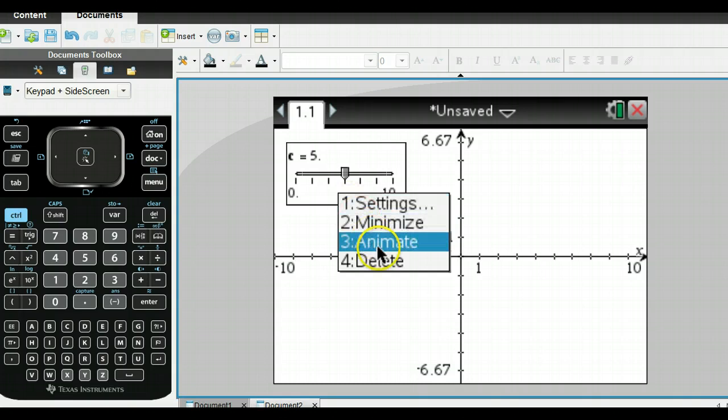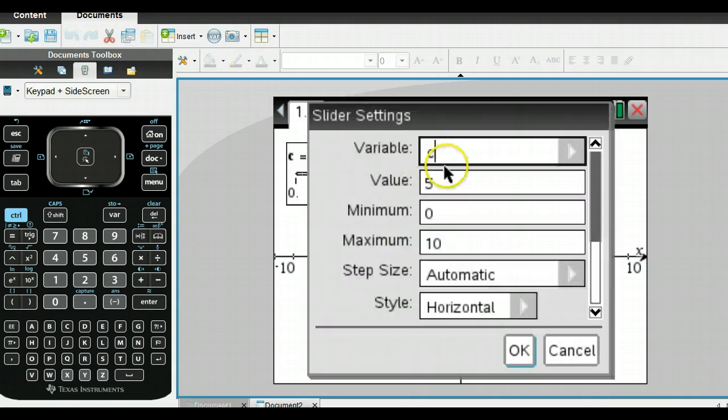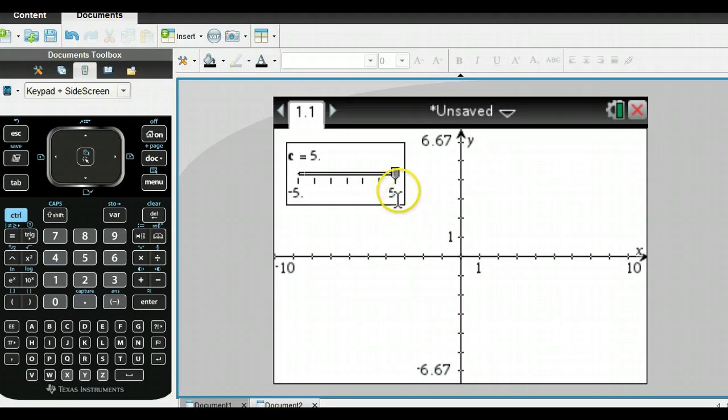If I want to change this some more, I can do the settings here. For c, we want to do the value. It doesn't matter right now, but it will be the value that starts off. Maybe I want to go from negative 5 up to 5. You can size this and do different things. We want the horizontal, and here is the slider.